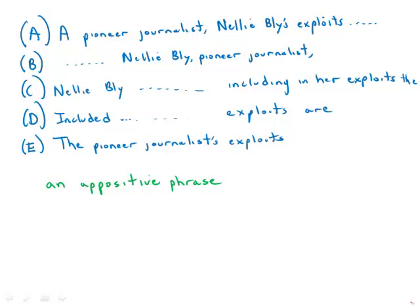A pioneer journalist, Nellie Bly's exploits included circling the globe faster than Jules Verne's fictional Phileas Fogg.